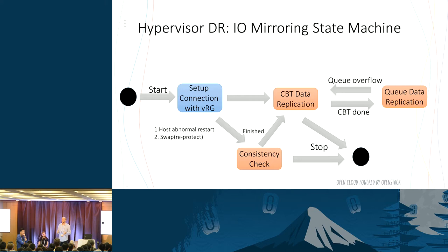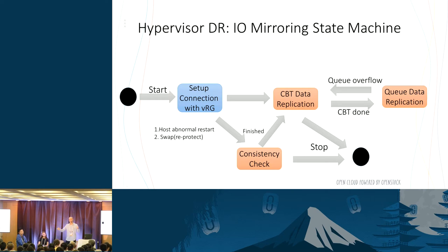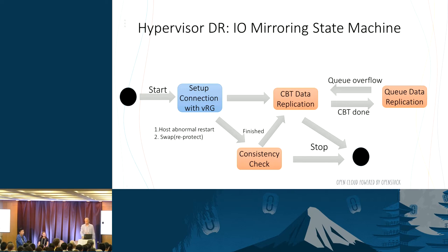We have a consistency check step. If a machine crashes, we want to verify everything is okay. On normal status, we take data in the queue and mark it as dirty CBT blocks. If we crashed and are unsure, there is a consistency check process between the two VRGs — they take the volume, send a SHA hash of all blocks, compare them, and synchronize as needed. After that state, you can return to the normal state, and of course you can stop the replication protection of the VM.